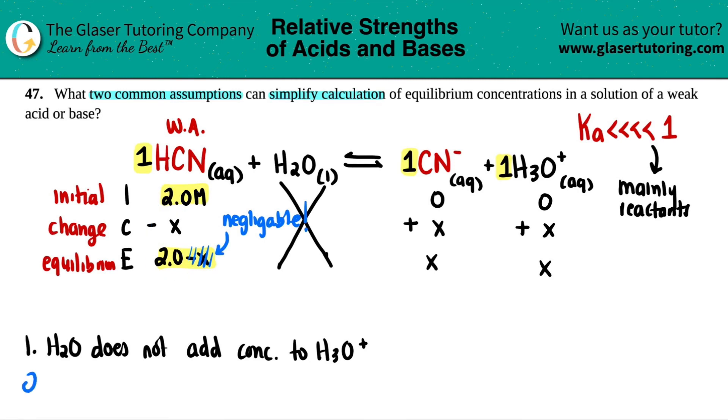So the second assumption is that we can assume that the change in the weak acid or the weak base is very small. And because of that, we can neglect the minus X. And you could just keep it as two. And that will help us tremendously when we start doing the math, which we probably will see in a little bit. But those are your two assumptions.